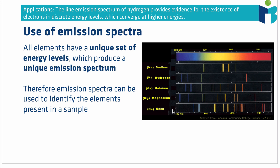Since each element has a unique set of energy levels, the transitions between them differ, meaning the collection of photons in the emission spectrum is also different for each element. These unique spectra act as a fingerprint to identify elements in an unknown sample. To identify elements, you heat or burn the sample, separate the emitted light into a spectrum, and match the wavelengths to known spectra. This is useful in laboratory elemental analysis, and also in astronomy, where we can determine what elements are inside a distant star just from the light arriving at Earth.